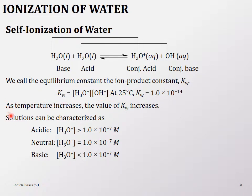We can characterize solutions as acidic, neutral, or basic. Acidic solutions are when the hydronium concentration is greater than 1×10⁻⁷, and basic is when it is less than 1×10⁻⁷. At neutral, the hydronium ion concentration equals 1×10⁻⁷ and so does the hydroxide ion concentration — a very delicate balance that gives us Kw.